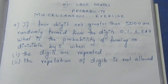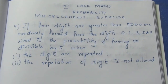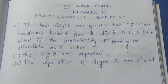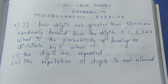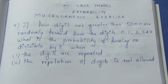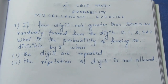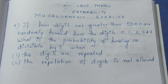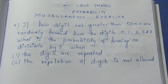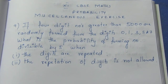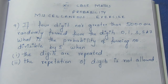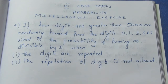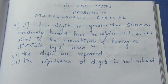Hello viewers, I am Ithli. In this Class 11 CBSE Math Probability Miscellaneous Exercise, Question No. 9, we will work through the problem. The question is: if 4-digit numbers greater than 5000 are randomly formed from the digits 0, 1, 3, 5, 7, what is the probability of forming a number divisible by 5? Two subdivisions are given: when digits are repeated, and when repetition of digits is not allowed.